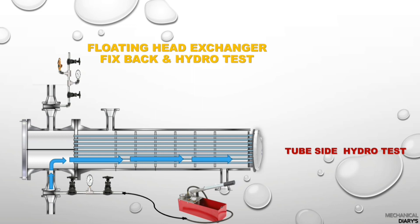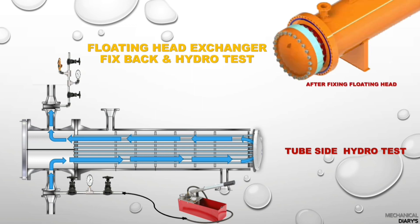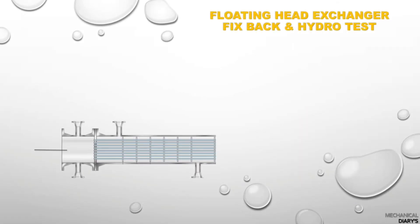Once tightening is completed, pressurize the tube side from the bottom nozzle. Make sure rear venting is completed. Once the pressure is stable, check for leaks at the floating head flanged area and channel head cover area. Before calling inspection, make sure the shell side is completely dry, because any tube puncture will be detected through the shell side nozzle area.